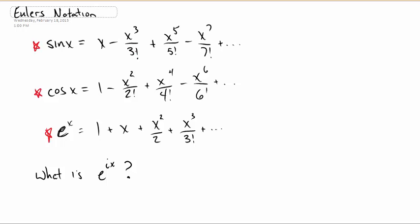Sine of x is equal to x minus x cubed over 3 factorial, plus x to the 5th over 5 factorial, minus x to the 7th over 7 factorial, and so on and so on indefinitely. This is an infinite series, an alternating infinite series.